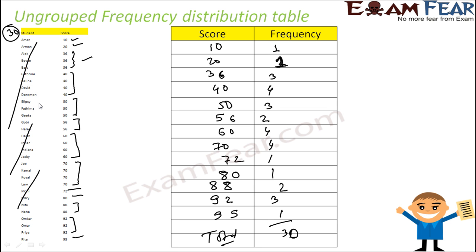This is called a frequency distribution table because we have implemented a new term called frequency. And with this, it is a little easier. Even if you have 3000 observations, they will be of the same range. So these frequency numbers will increase — frequency 1 may become 10, this may become 7 or 8 — but the number of rows will not increase so much.